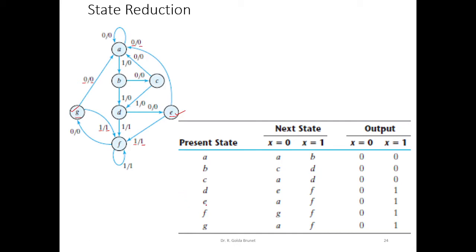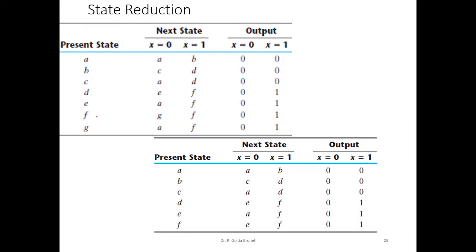So in this case, state E and G are equivalent, meaning we can keep any one of them and replace the other with the existing state. We can find that out very easily using the transition table — we just need to find which two rows are the same. We have found that G and E are equivalent because for input 0 they transit to A in both cases, and for input 1 they transit to F, with outputs 0 and 1 respectively.